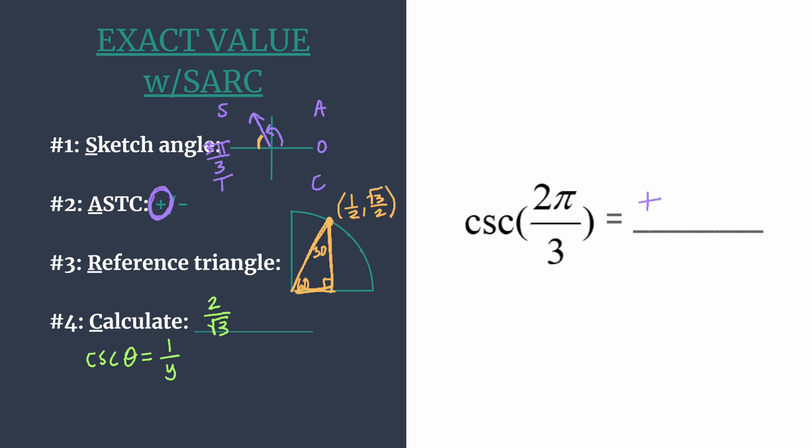And now of course we're not going to leave it like this unsimplified with a radical in the denominator. So we simply need to rationalize or multiply this term by square root of 3 over square root of 3. So our final answer will be 2 root 3 over 3. And of course we've already said that it's positive.